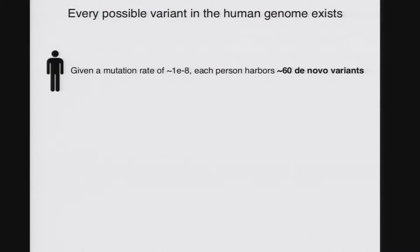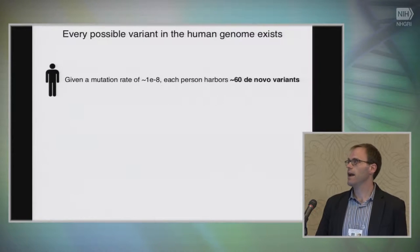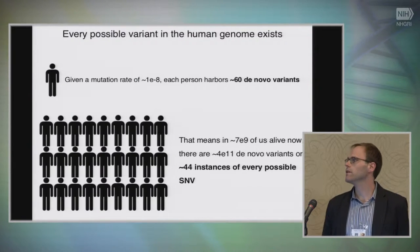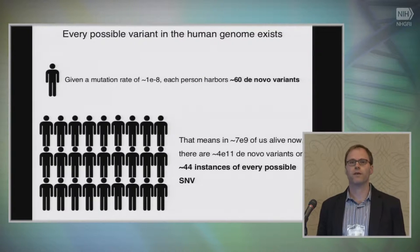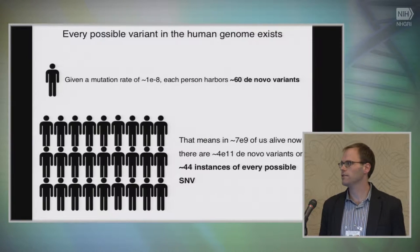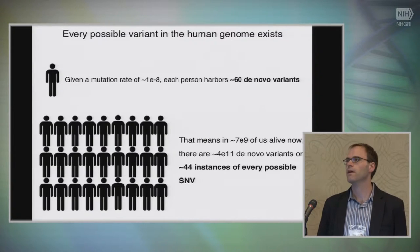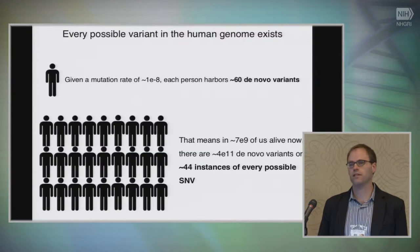The scale of the problem, if we're thinking about using genomes in a clinical setting in a large number of patients, is really extreme. If we give ourselves a fairly reasonable per base per generation mutation rate, then everybody carries something like 60 de novo variants, and in the whole population of the world there are something like 44 instances of every possible single nucleotide variant. The point is that all the mutations that are out there, to a first approximation, are going to need to be dealt with somehow, and that's really challenging.